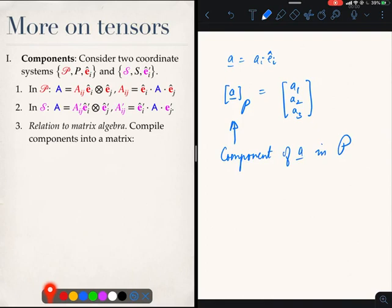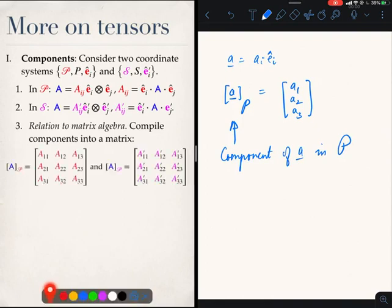We could do the same thing with the components of this tensor A in P, we can write them all down in a matrix form. And we could also do the same thing for the components of A in S.